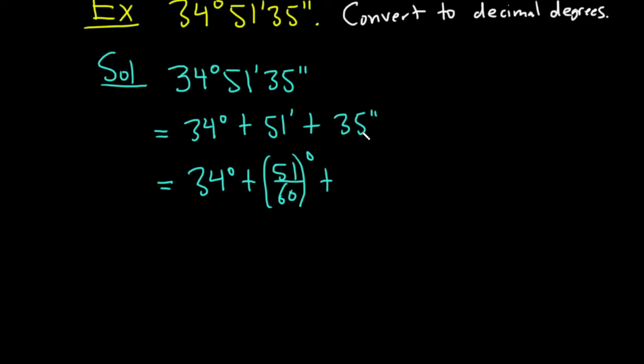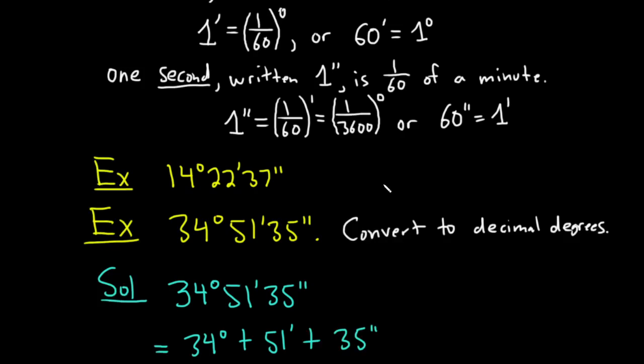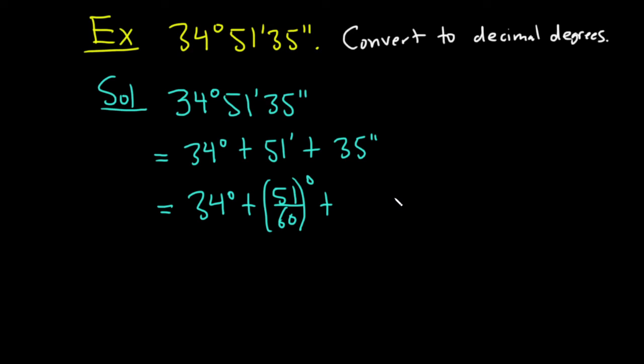Plus and remember it takes 3600 seconds to make a degree. We saw that here because 1 second is equal to 1 over 3600 of a degree. So it takes 3600 seconds to make an actual degree. So this is going to be 35 over 3600. So really really small.